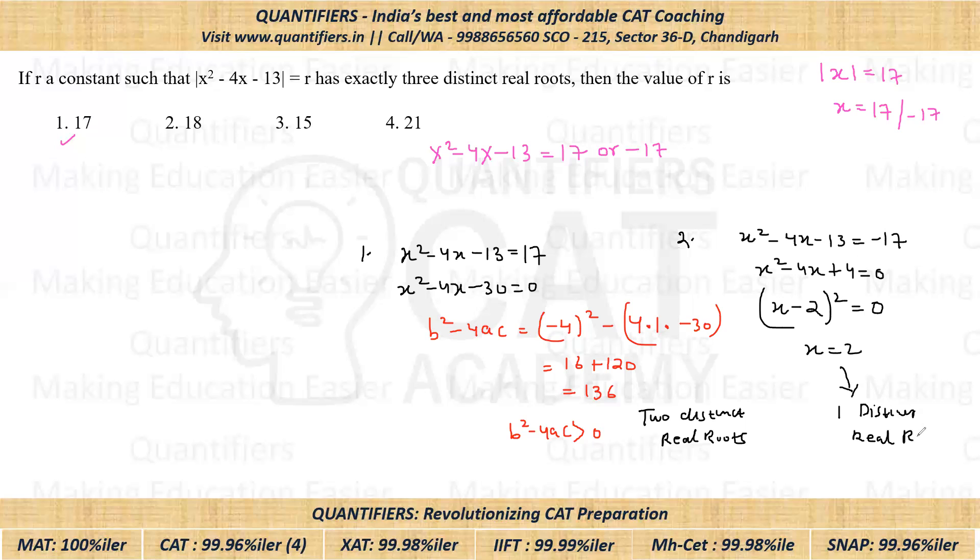So are we getting three distinct real roots? Yes, we are getting three distinct real roots. So that means option number one is satisfying. This has to be the correct answer.